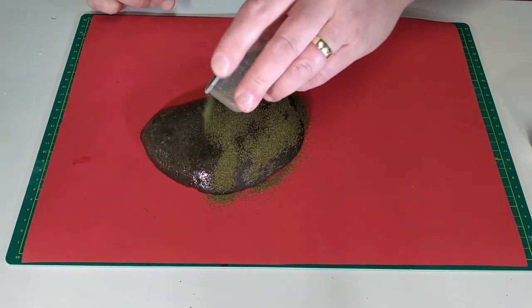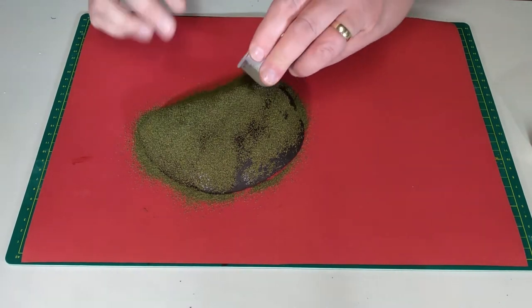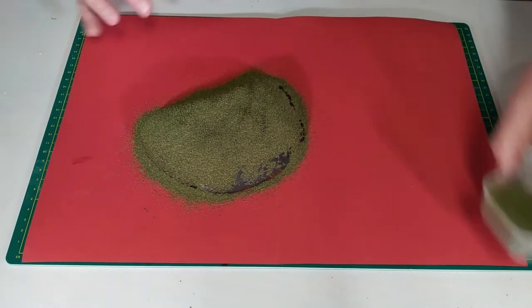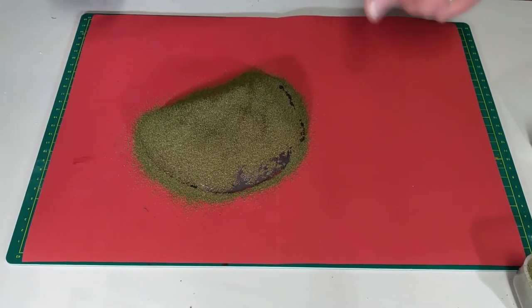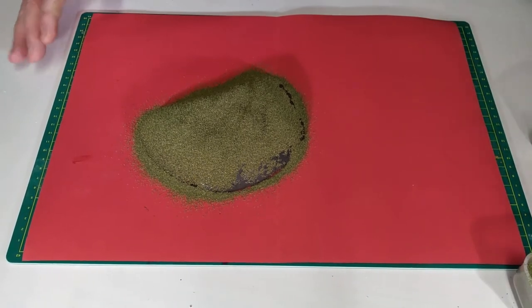Make sure you give the hill a good cover of flock, not worrying about any excess as this will be caught by the piece of paper. Once the hill is significantly covered, give it time to dry. Drying time will vary depending on the glue and the room conditions.